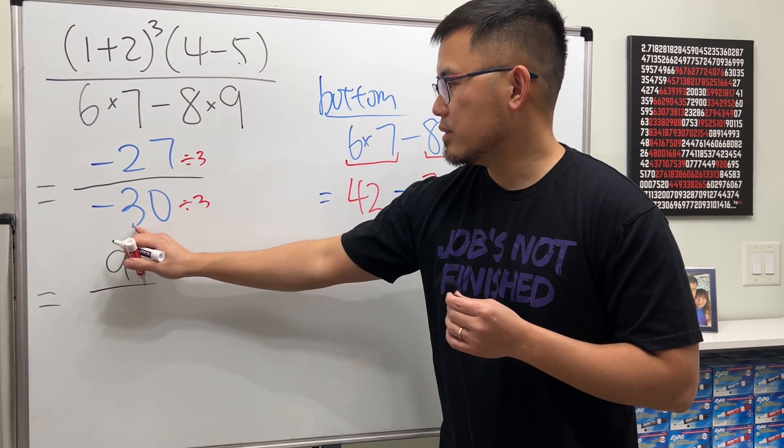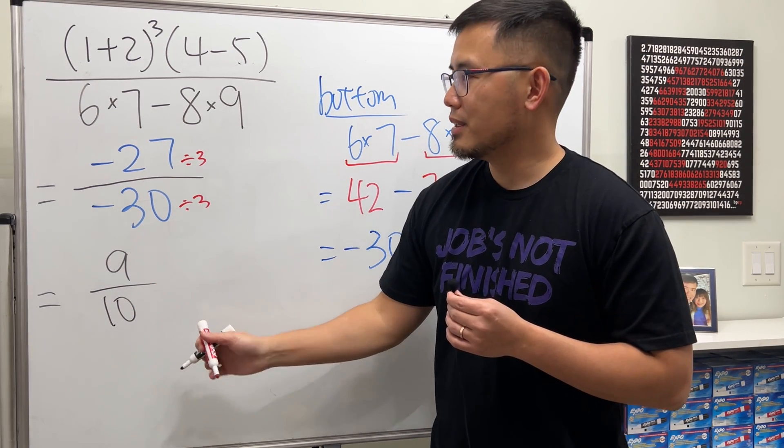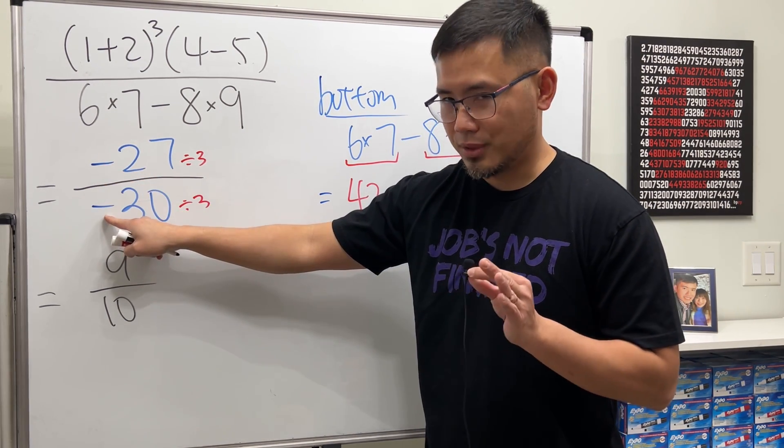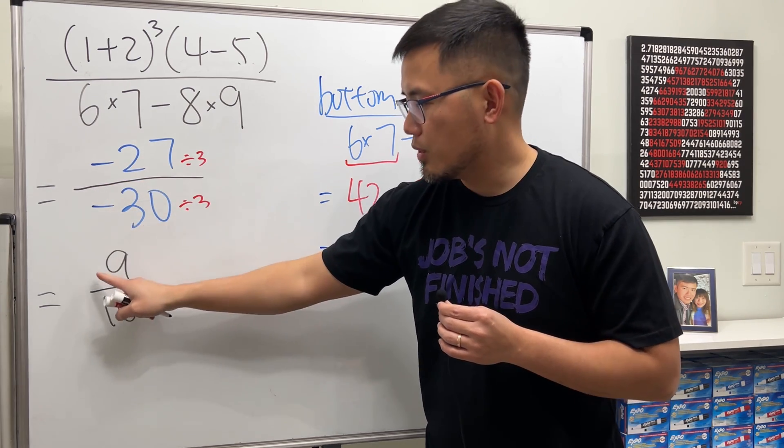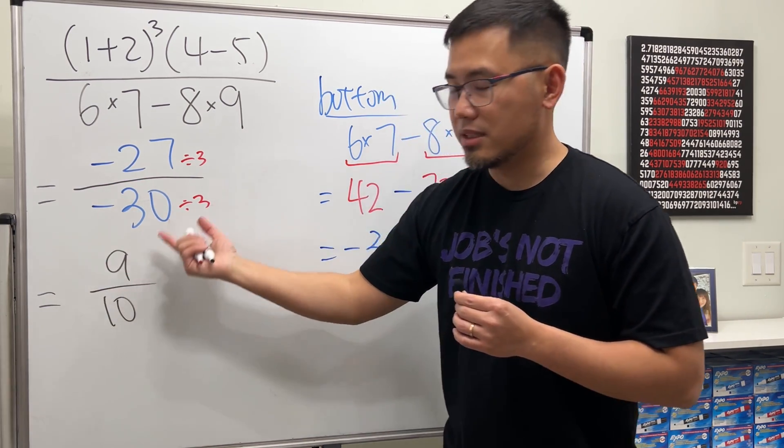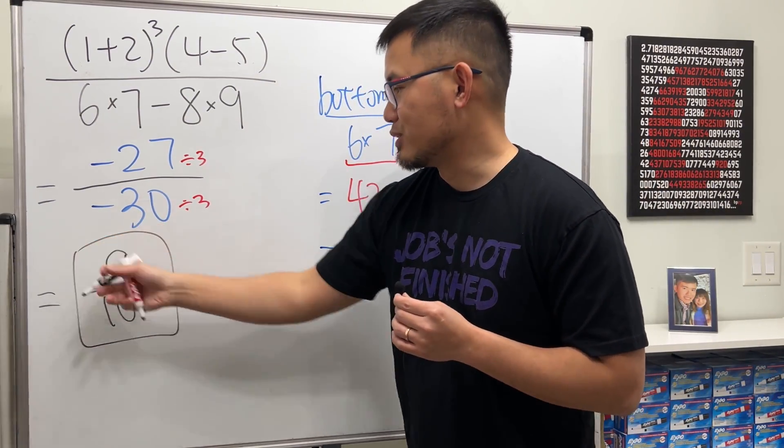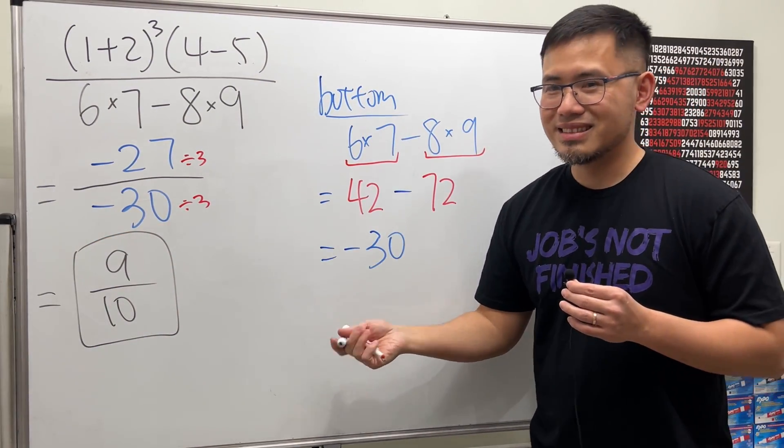Just like that. Finally, negative times negative - sorry, negative divided by negative - we get positive. So there's nothing anymore, you don't have to put down the plus. This is a positive 9/10. So that being said, the answer is just 9/10 and we're done. That's it.